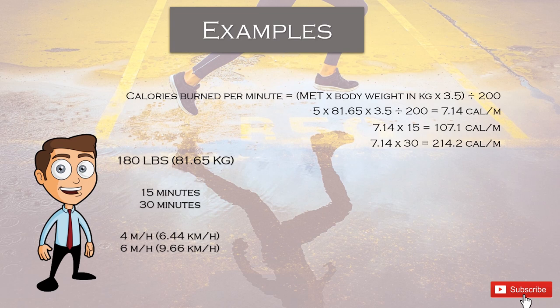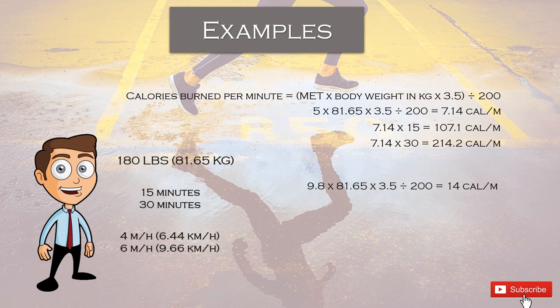If I were to run 6 miles per hour, we first need to calculate calories per minute because the MET equivalency is different. The MET equivalency for 6 miles per hour is 9.8, so the formula is: 9.8 times 81.65 times 3.5 divided by 200. If I ran 6 miles per hour, I would burn 14 calories per minute — that's 210 calories for 15 minutes, or 420 calories for 30 minutes.